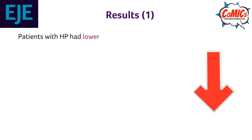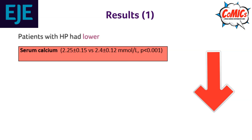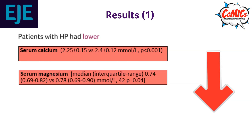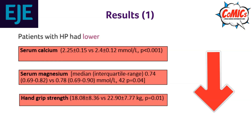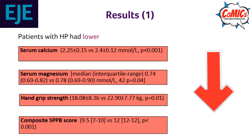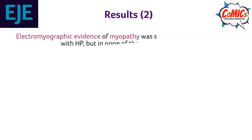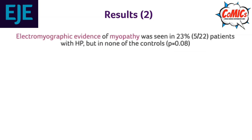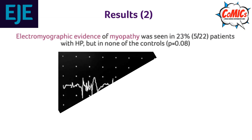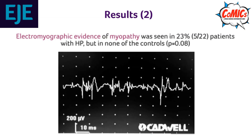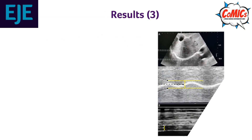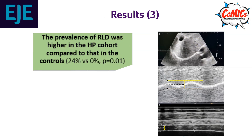Results: patients with hypoparathyroidism had lower serum calcium, serum magnesium, hand grip strength, and composite SPPB score. Electromyographic evidence of myopathy was seen in 23 percent of patients with hypoparathyroidism, but in none of the controls.